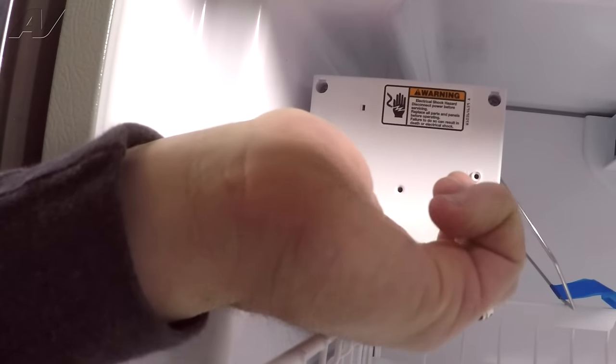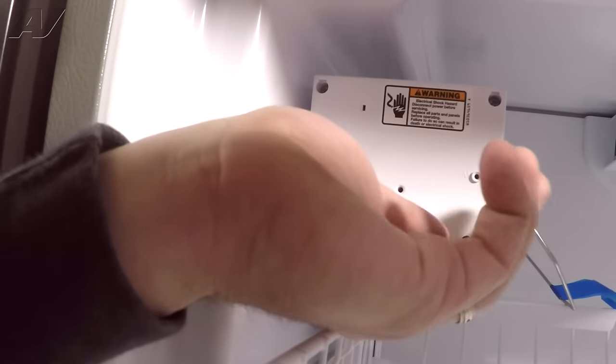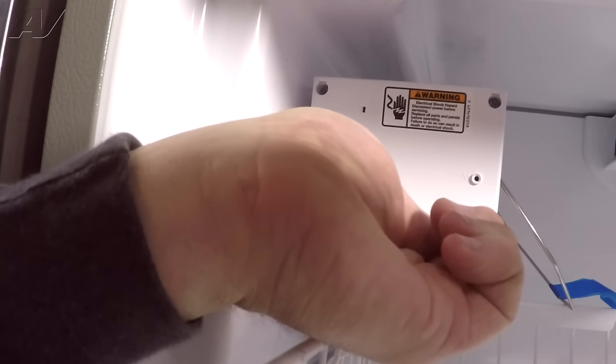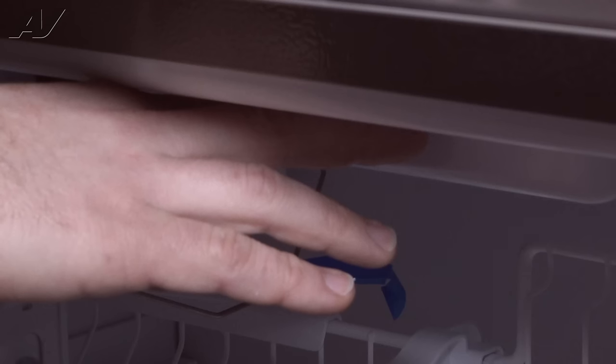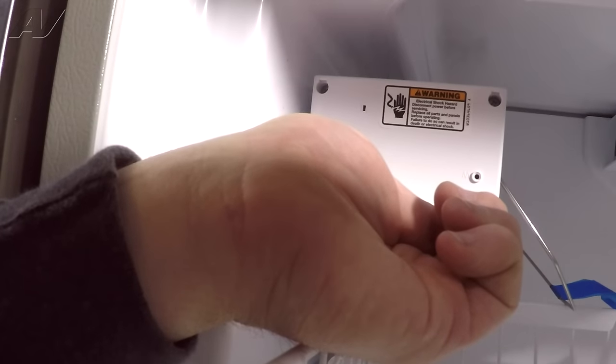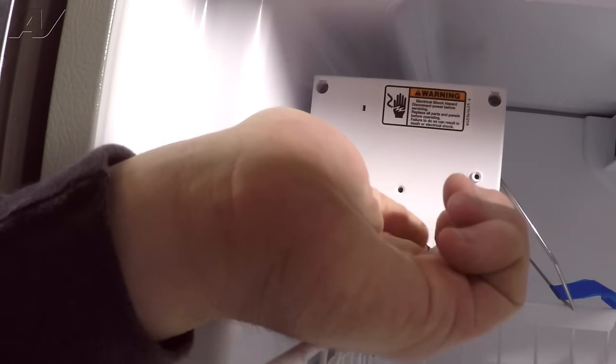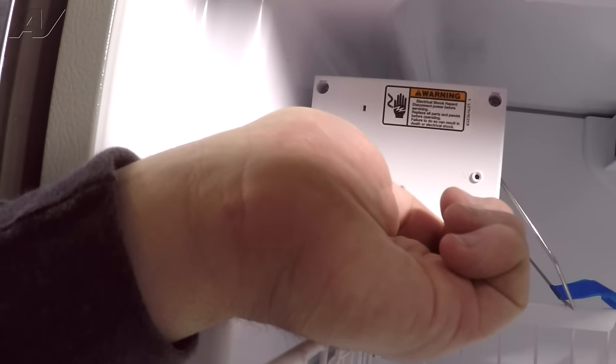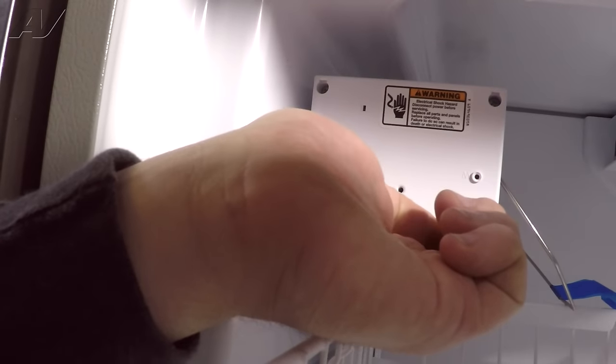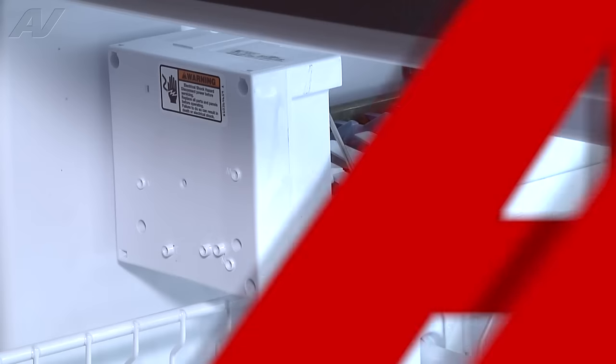You'll actually hear about 15 seconds from when it starts, you will hear a click from the ice maker. Once you hear that click, you can remove your jumper wire. It's no longer needed to finish the cycle. If you don't remove it within a reasonable amount of time, the ice maker will not fill with water. It's actually going to bypass that. So once you hear that click, you do want to remove your jumper wire and the ice maker should still continue through the cycle.